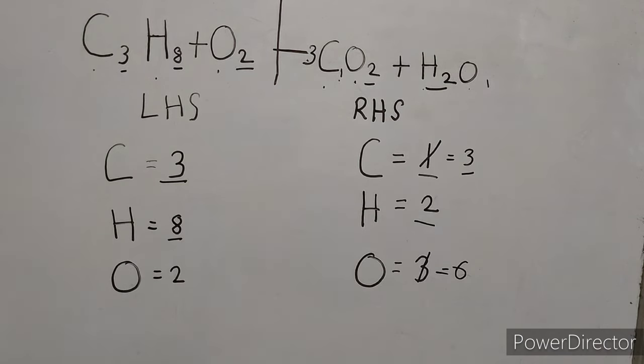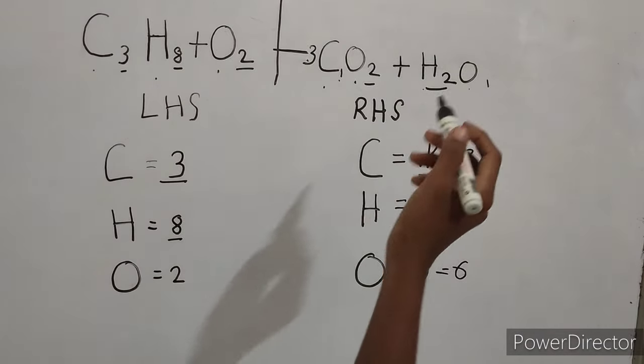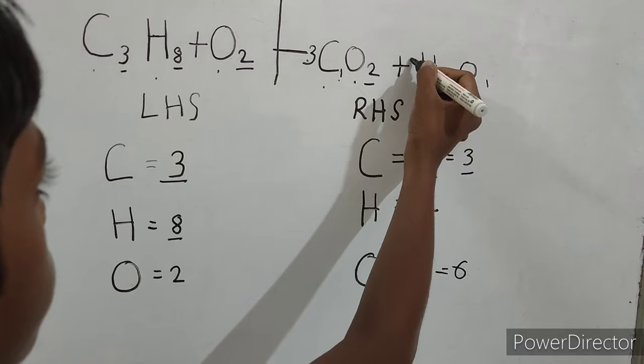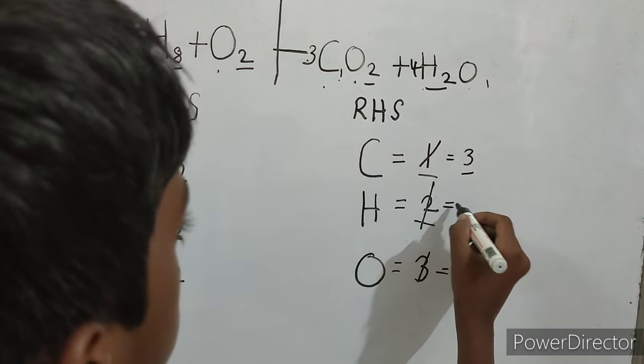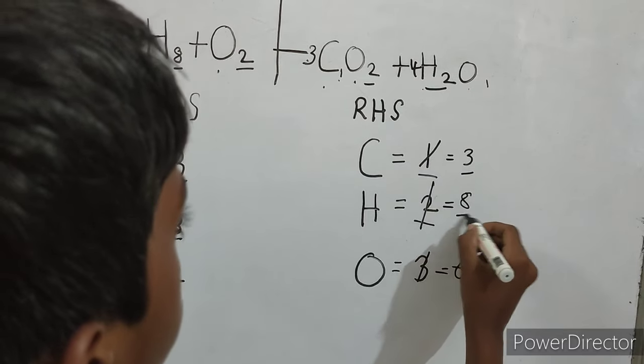So here we have 3 times 2. So if we write 4 here, 4 times 2 is 8. So this becomes 8 and this is balanced.